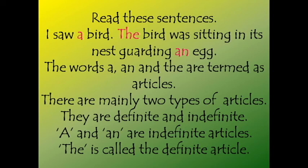The words a, an and the are termed as articles. So there are mainly two kinds of articles: definite articles and indefinite articles. A and an are the indefinite articles, whereas the is called the definite article.